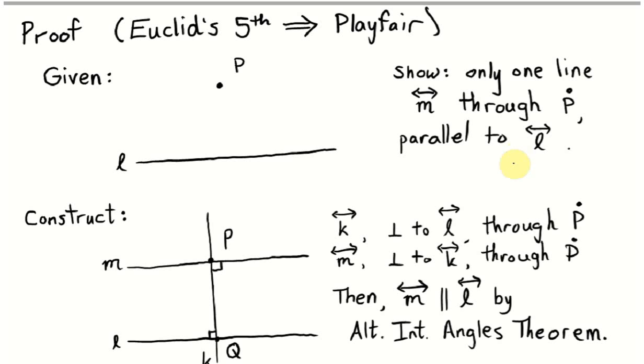Well, it's easy to construct one parallel line. Start by constructing a perpendicular to L that goes through the point P. And then, for this line K that we've constructed, construct a line perpendicular to K that goes through the point P. We can construct these lines because of Euclid's propositions 11 and 12. Furthermore, because all of these lines are perpendicular, we know that these alternate interior angles are equal. Therefore, by the alternate interior angles theorem, Euclid's proposition 27, we can conclude that the line M is parallel to the line L.